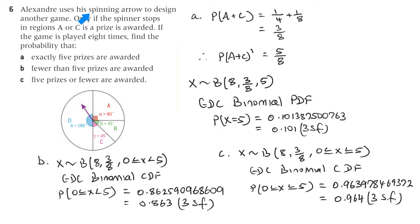Question six. Alexandre uses his spinning arrow to design another game. Only if the spinner stops in regions A or C is a prize awarded. If the game is played eight times, find the probability that A, exactly five prizes are awarded. Well, the probability of it landing in A or C is a quarter, because that's a quarter and an eighth. And a quarter and an eighth is three on eight. So the probability of it not landing on A and C is five on eight. And it says here, find the probability that exactly five prizes are awarded.